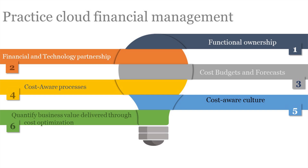It involves the following best practices. Functional ownership: you need to establish a cost optimization function responsible for establishing and maintaining a culture of cost awareness. Depending on the organization size, it can be an individual or a team with diverse skill sets ranging from project management and financial analysis to software development. Executive sponsorship ensures support for well-functioning responsibilities and helps define organizational goals for cost optimization in the cloud.